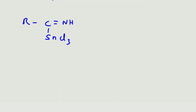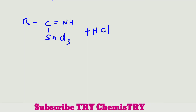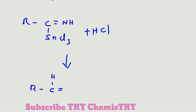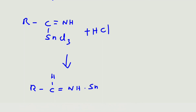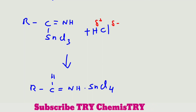When one more hydrochloric acid is added to this amine compound, we get R–CH=NH·SnCl₄. The H⁺ ion attacks this carbon — since nitrogen is highly electronegative — and we get R–CH=NH₂ with SnCl₄.